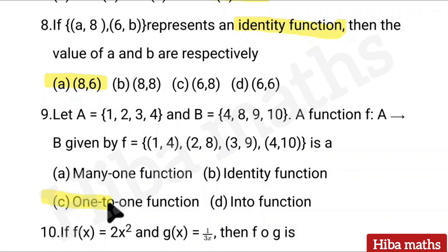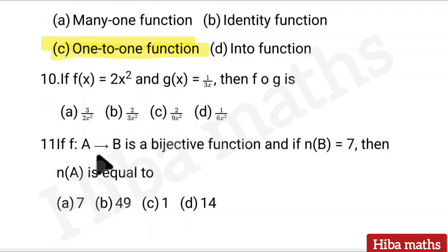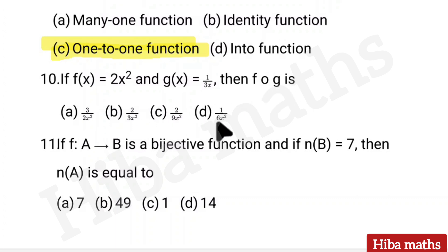Answer: C — one-to-one function. Each question has distinct answers. Tenth question: If f(x) is equal to 2x² and g(x) is equal to (1/3)x, then f of g is — 4 options given. Answer: option C — 2/(9x²).